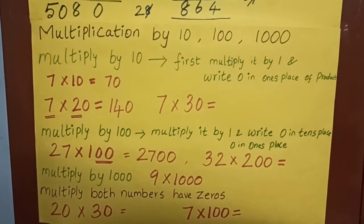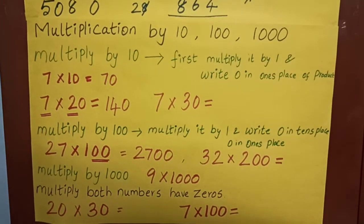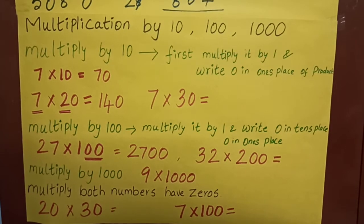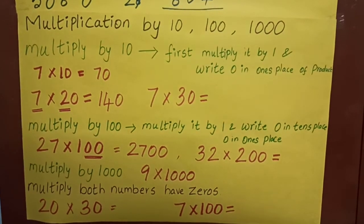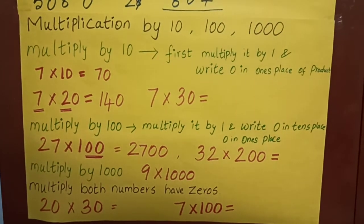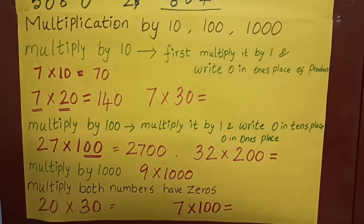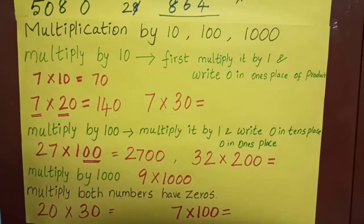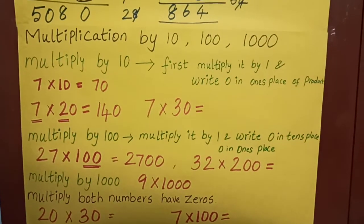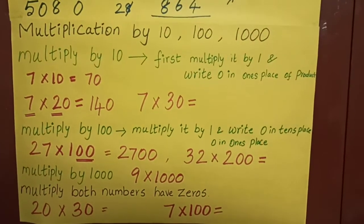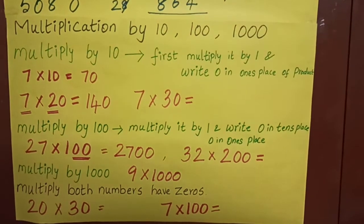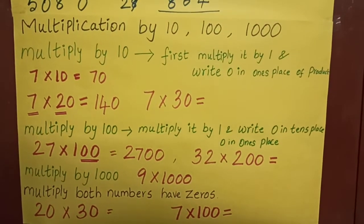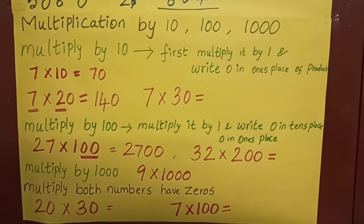Now we are going to see the next procedures: multiplication by 10, 100, and 1000. If I am giving a number with zeros, what is the procedure we have to follow? If the number is having a zero, what is the procedure we have to do?